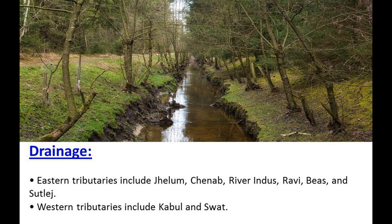This is the drainage of the region. Eastern tributaries include Jhelum, Chenab, River Indus, Ravi, Beas and Sutlej. Western tributaries include Kabul and Swat rivers. So, drainage flows through these major rivers of Pakistan.